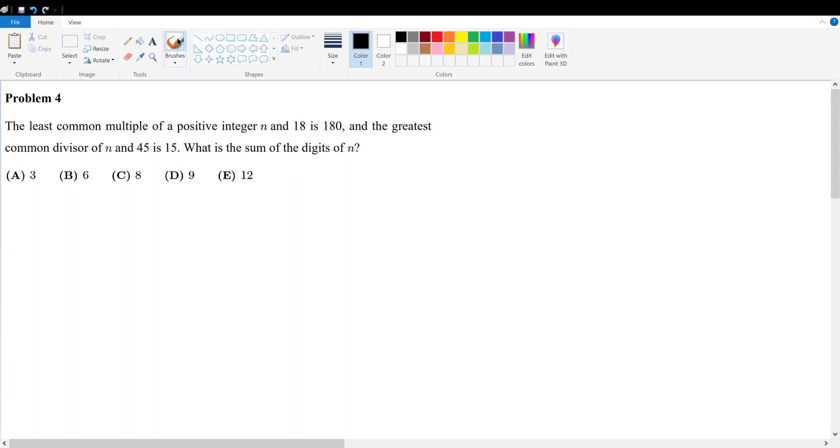Problem four. The least common multiple of a positive integer n and 18 is 180. We're also told that the greatest common divisor between n and 45 is 15. What is the sum of the digits of n?